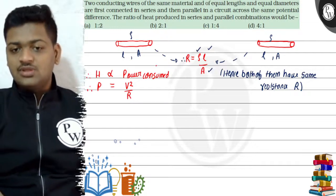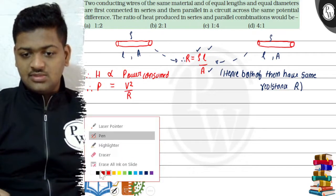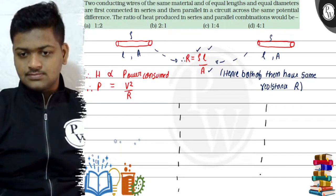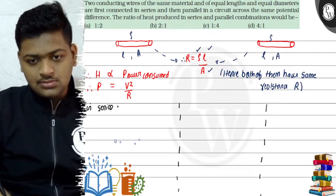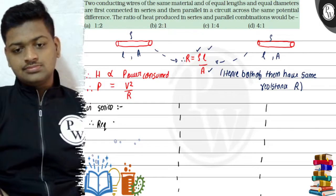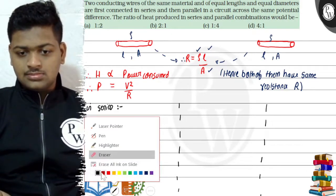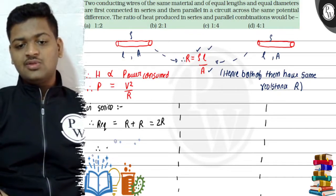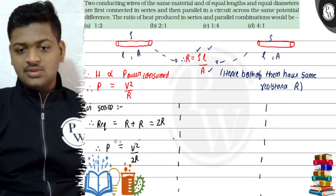We will find the equivalent resistance in series and in parallel, then take the ratio of power — which is the heat ratio. In series, R_equivalent = R1 + R2 = R + R = 2R. So the power in series is P = V²/2R, which is the heat produced in series.